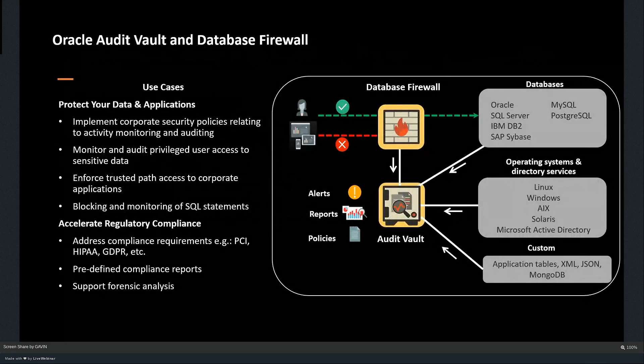There are two products here: Audit Vault and the Database Firewall, bundled together as the AVDF product. In terms of infrastructure, you have two different servers — a firewall server and an audit vault server. In my VirtualBox environment, I have three VMs running: one dedicated to audit vault, one to the firewall, and a third where I'll connect from an Oracle 19c database. You don't need both — database firewall is optional. If you don't want to run it, you can just deploy the audit vault server and add the firewall server later.